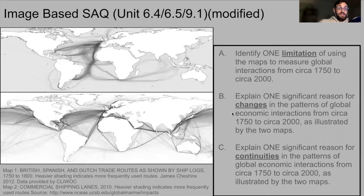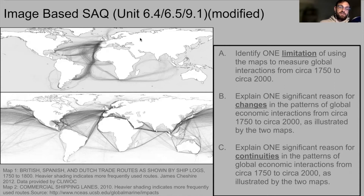Here we have an image-based SAQ. This image-based SAQ is a combination of unit six and unit nine put together, and it's been slightly modified for this presentation, but it's one of my favorites because not only do I like maps, but I like maps with data. The top map shows British, Spanish, and Dutch trade routes shown by ship logs between 1750 and 1800 — so pre-Age of Imperialism, Atlantic revolutions. The bottom one includes ship lanes in 2010, the modern day. The difference is just startling.